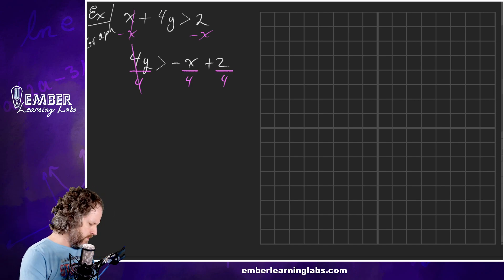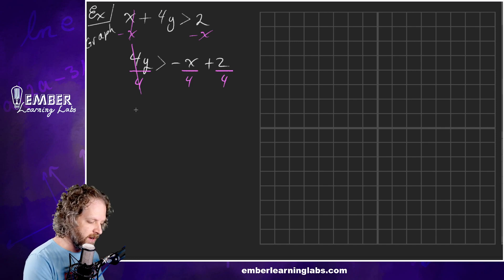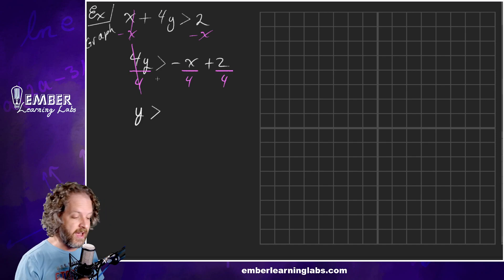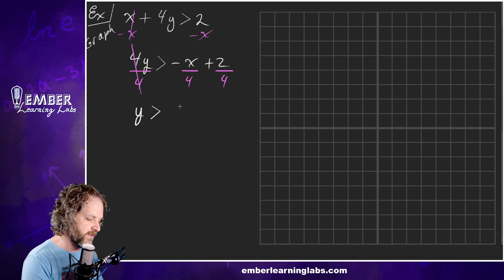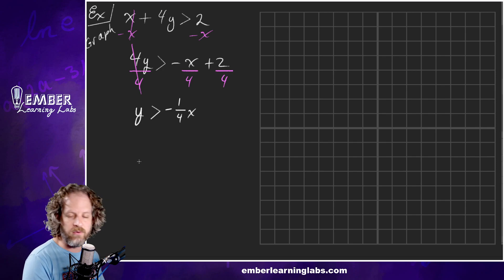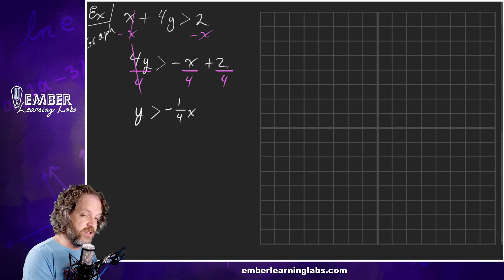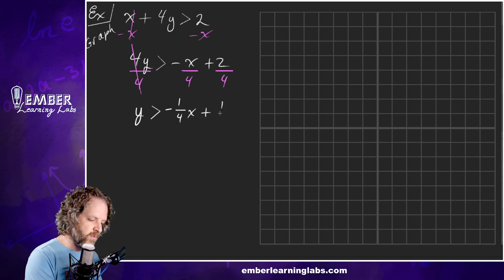So we bring down: y is greater than... Now remember from our inequalities, if this was a negative 4, then this inequality would flip. We've got negative 1 over 4 — I'll write it as negative x over 4, that's the same thing, just a little easier to see. And then 2 over 4 reduces to one half, so plus one half.